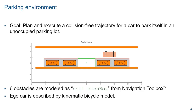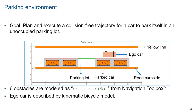Let's look at the parallel parking example. The parking environment is for parallel parking, and the goal is to plan and execute a collision-free trajectory for a car to park itself in an unoccupied parking lot. In this environment, we have a yellow line which you cannot cross, a road curbside, four parked cars represented as orange boxes, and an ego car. The target parking lot is the green one in the middle. The obstacles are modeled as collision boxes from the Navigation Toolbox, used to check clearance between the ego car and obstacles.